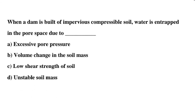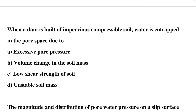Next question: when a dam is built of impervious compressible soil, water is entrapped in the pore space due to — Option A: excessive pore pressure, Option B: volume change in the soil mass, Option C: low shear strength of soil, Option D: unsuitability of soil mass. The correct answer is Option B, volume change in the soil mass.